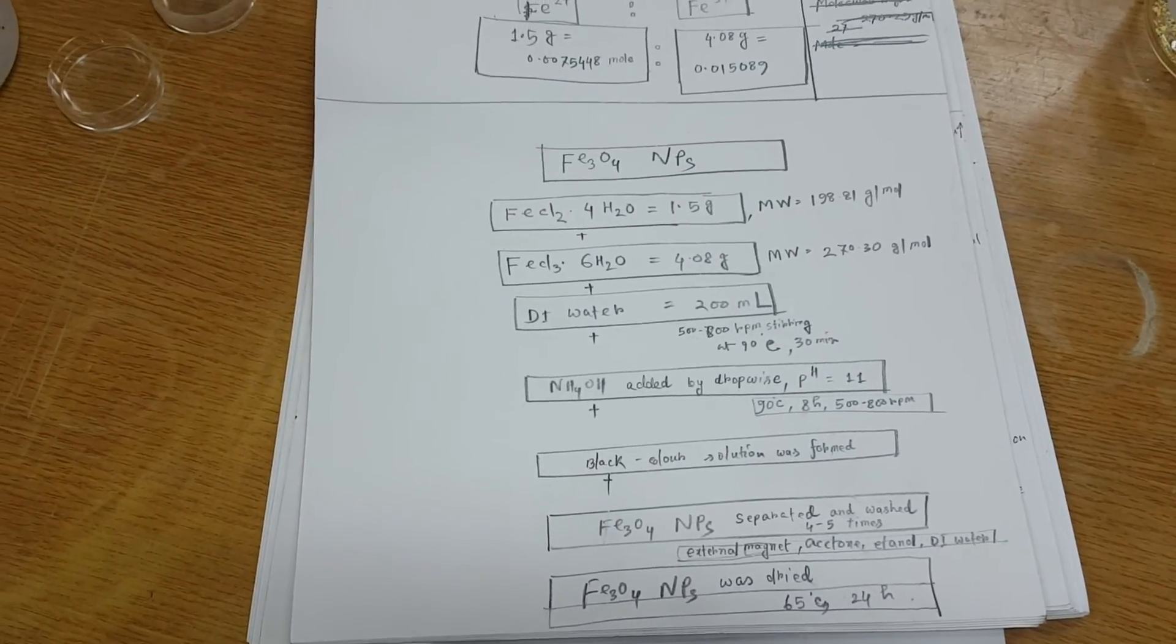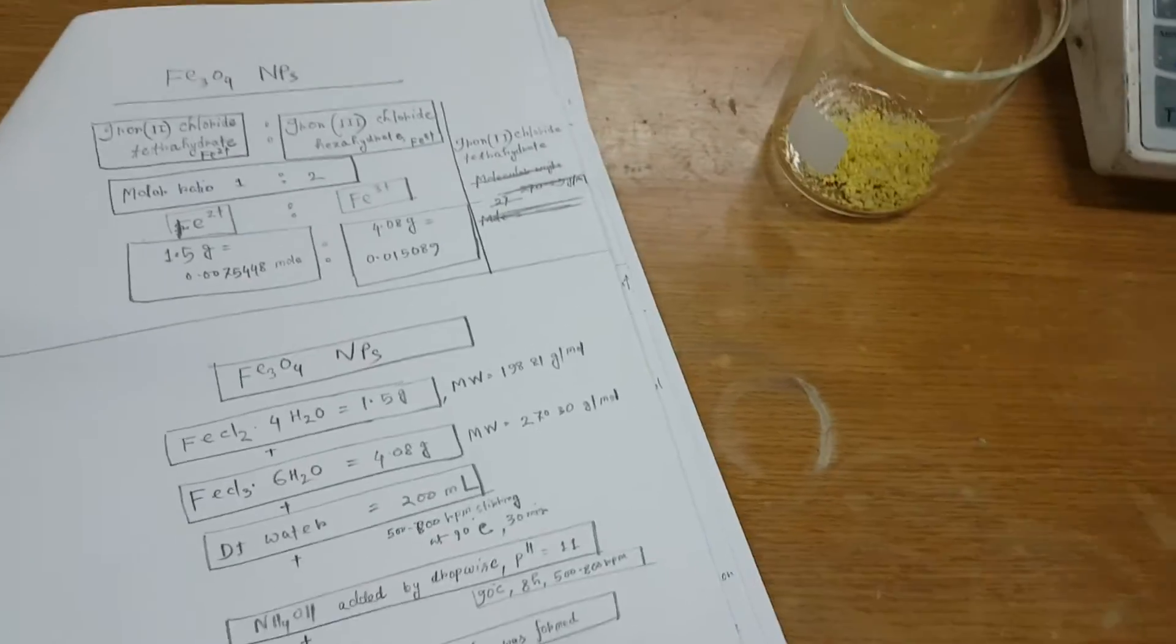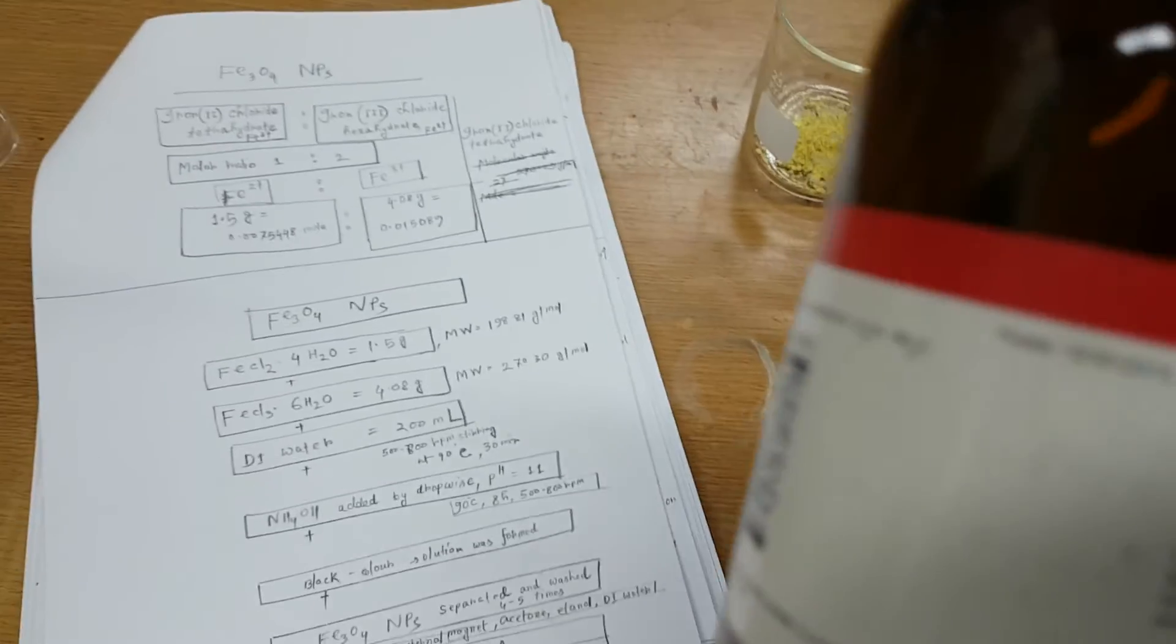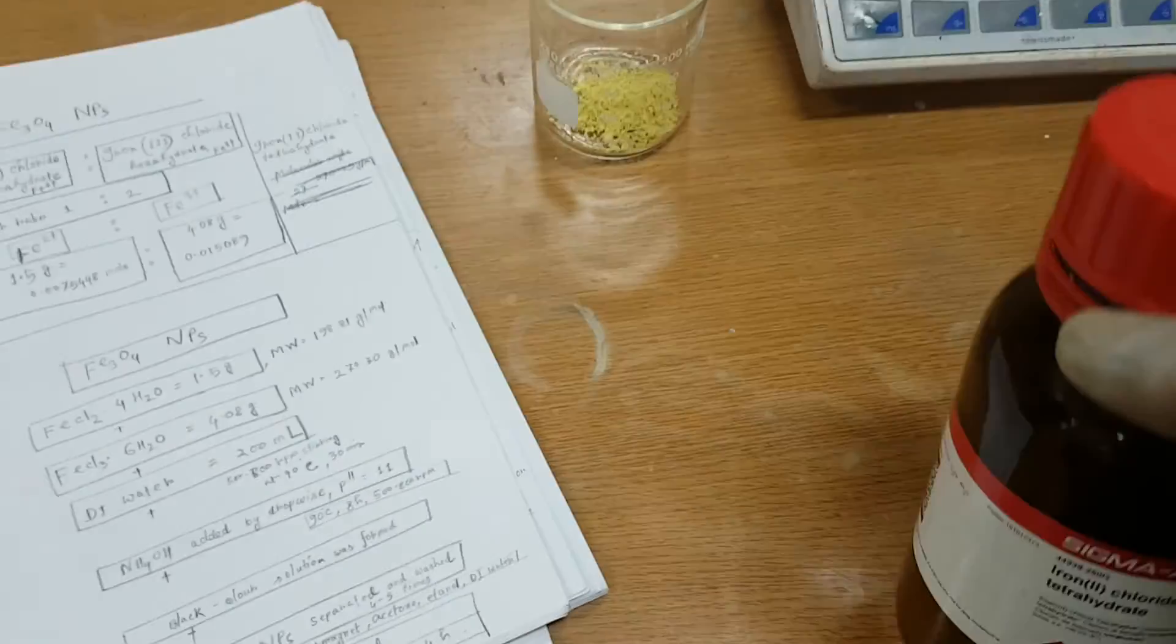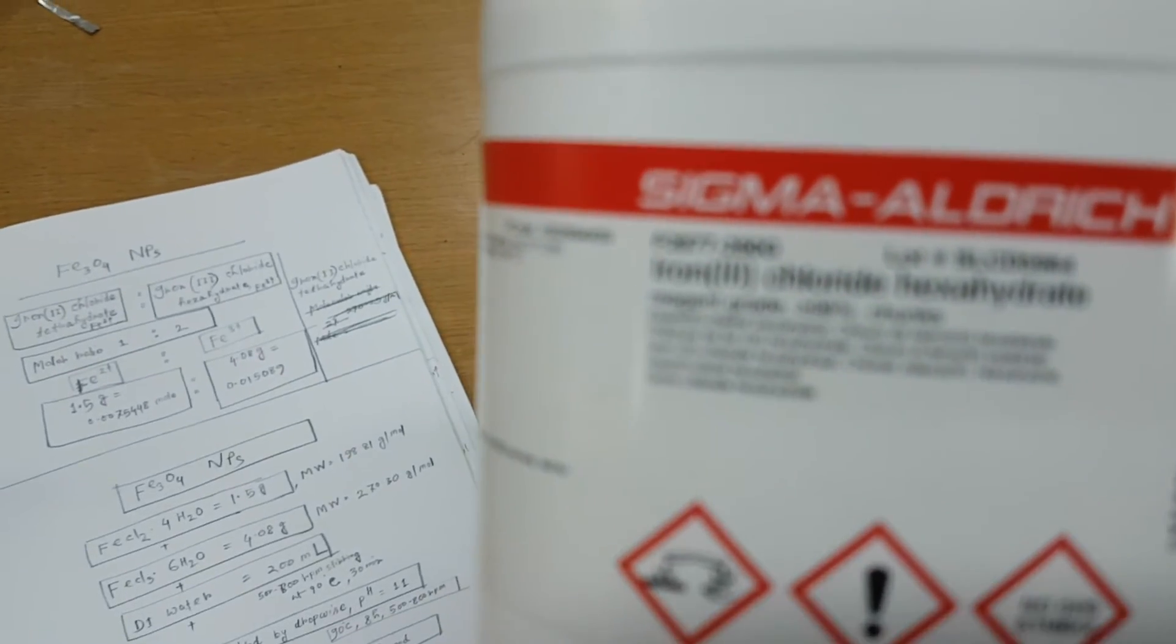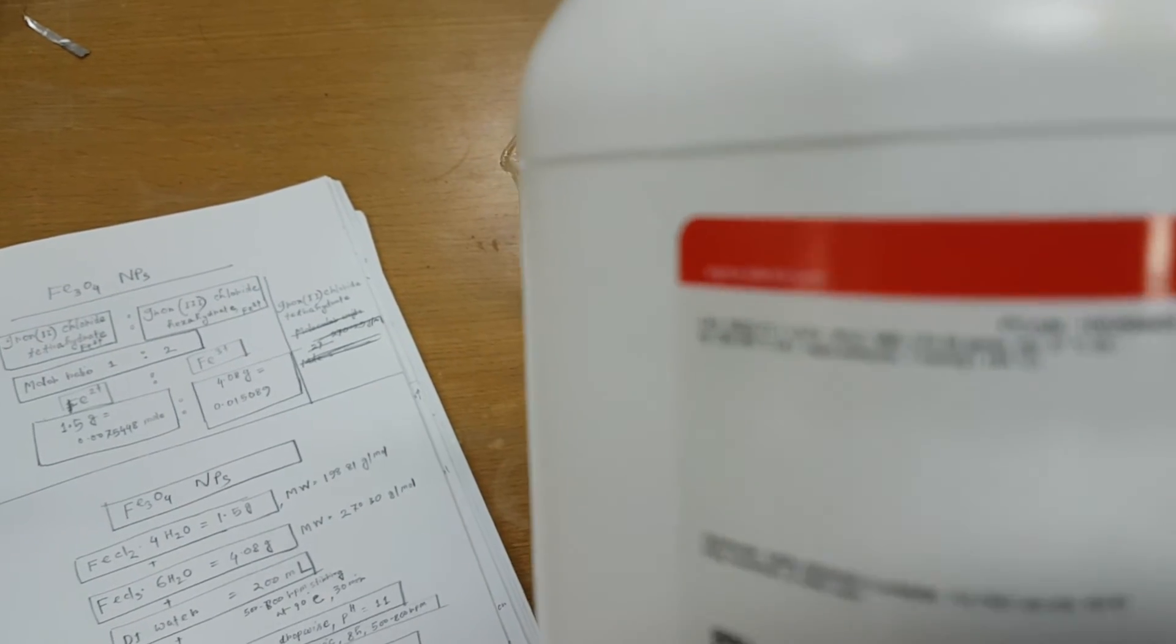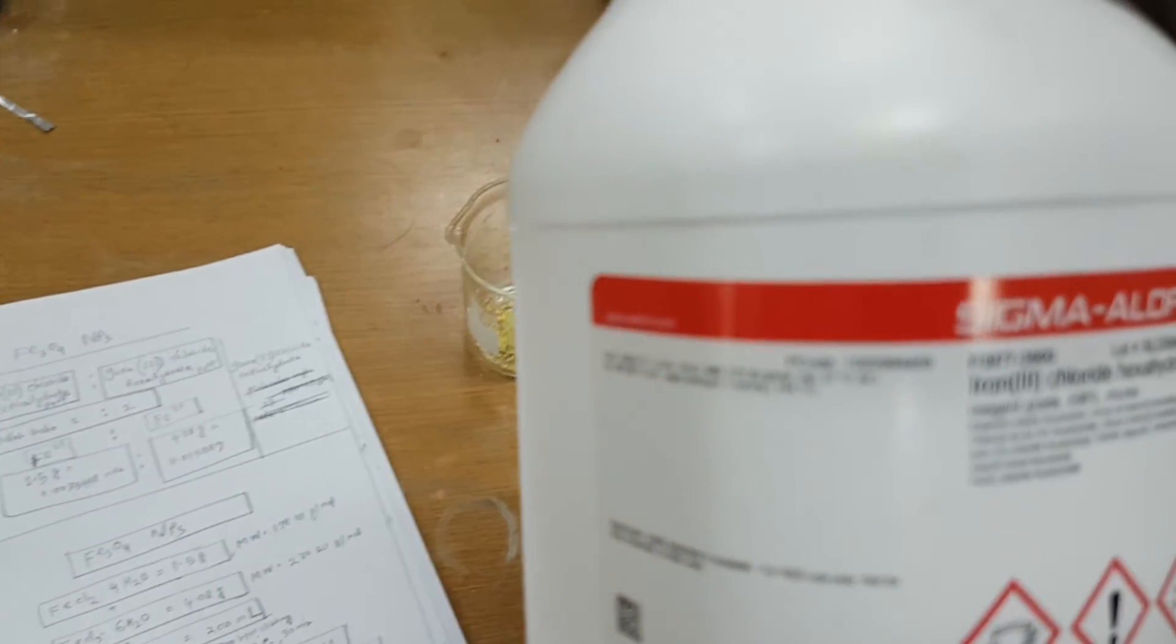And also I am helping you to synthesize in the practical form. So that is the iron chloride, iron chloride hexahydrate and that is iron chloride tetrahydrate and that is iron chloride hexahydrate. And also it marks the molecular weight to 70.30 gram per mole.